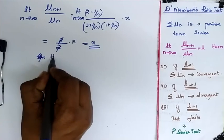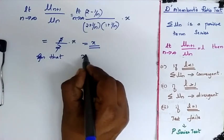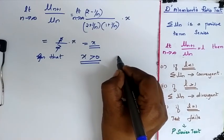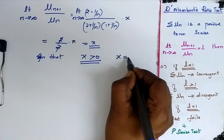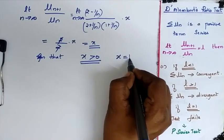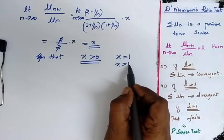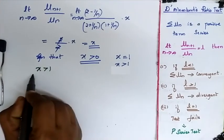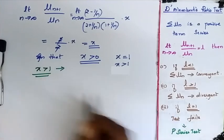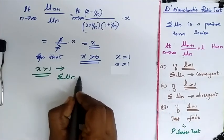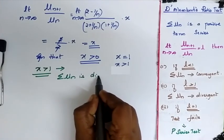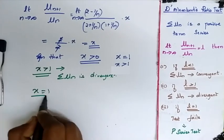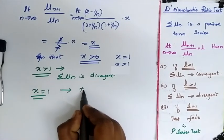Given that x is greater than 0, x might equal 1 or x might be greater than 1. When x is greater than 1, the summation un is divergent. When x is equal to 1, this test fails.